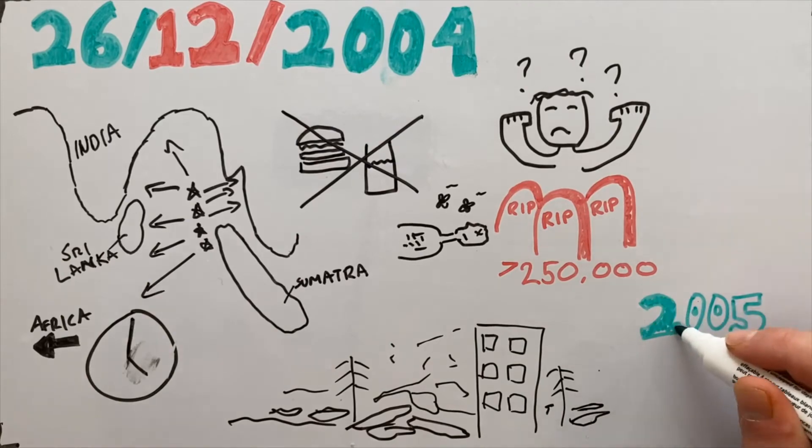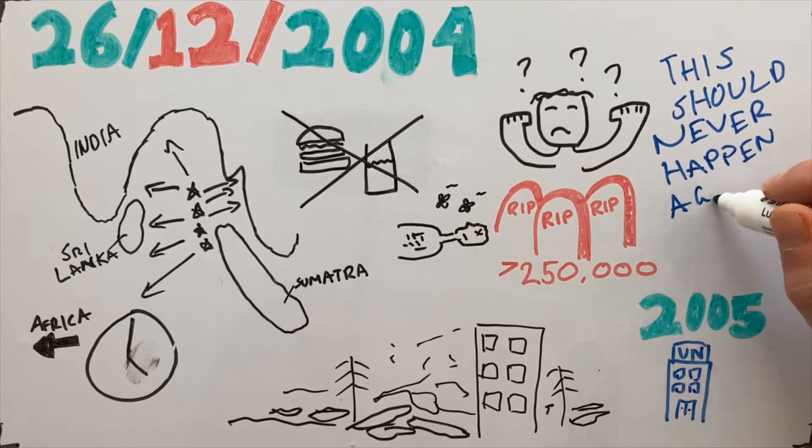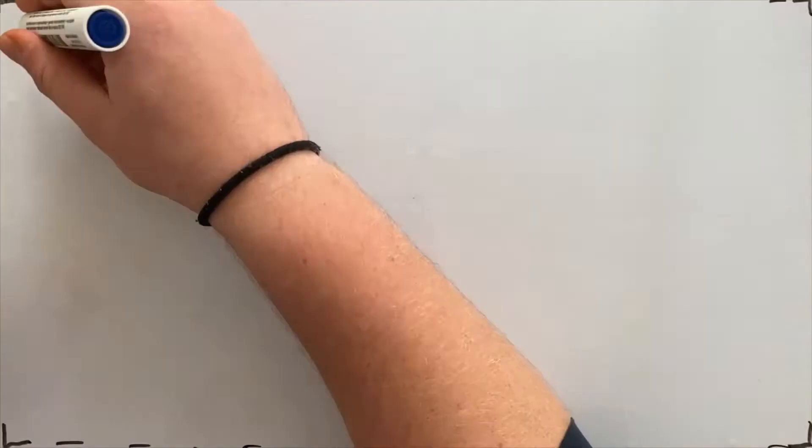In 2005, the UN met in Kyoto and it was decided that the damage done by the tsunami was unacceptable and resolved to create an Indian Ocean tsunami warning system.